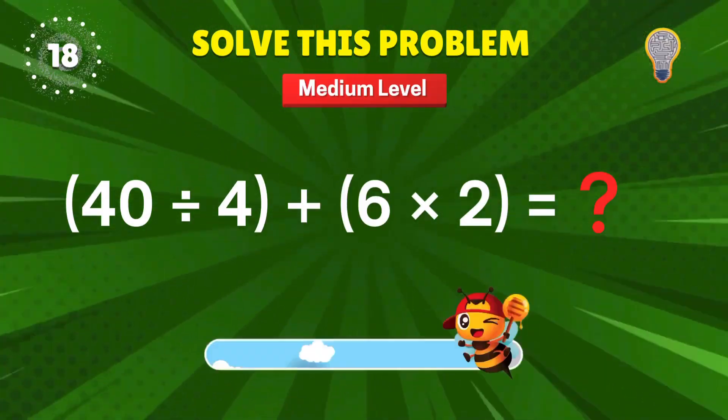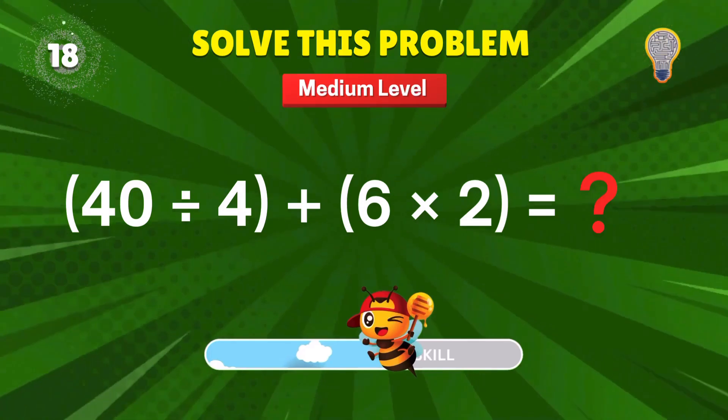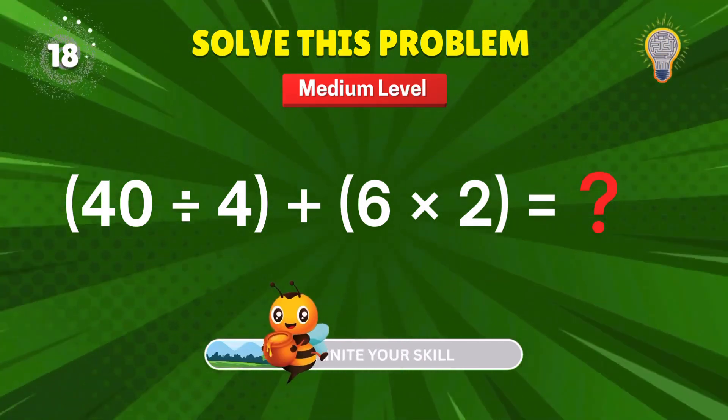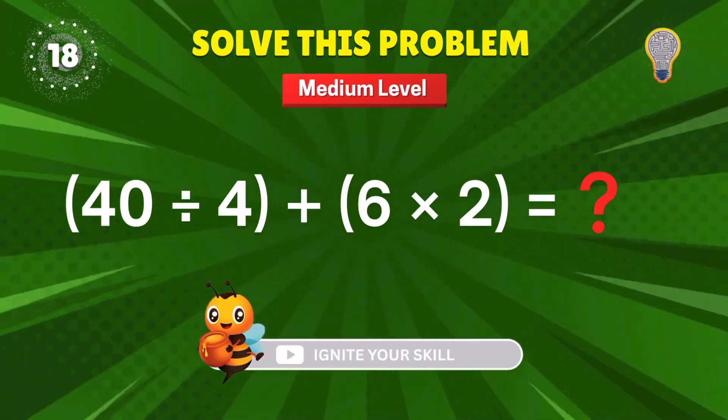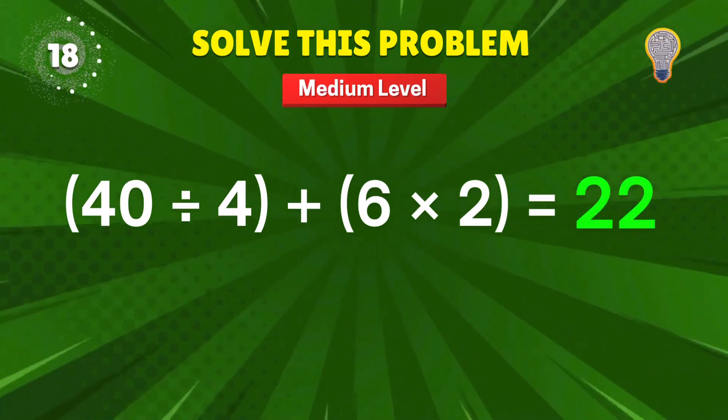40 divided by 4? Plus 6 times 2? A double scoop of math. 22. Double yummy. Plus 1 point to your score.